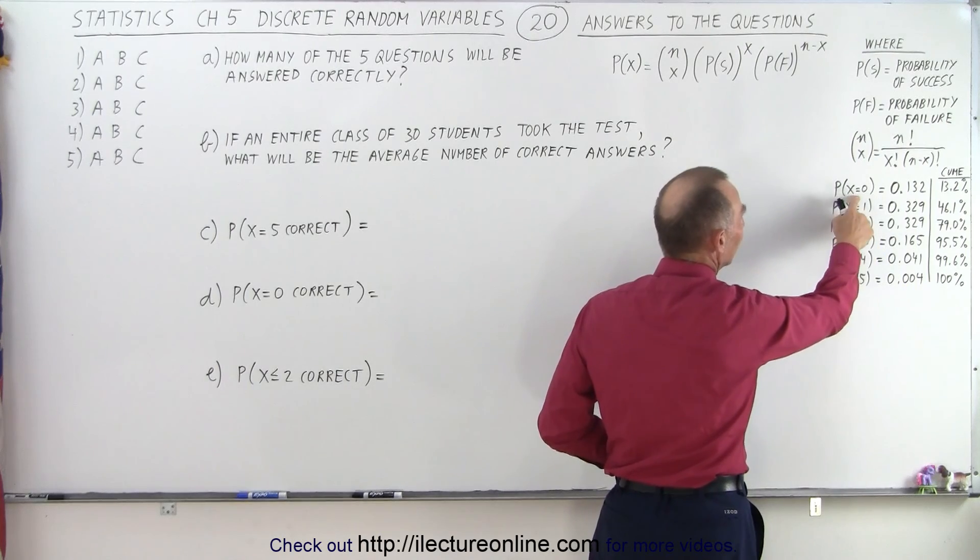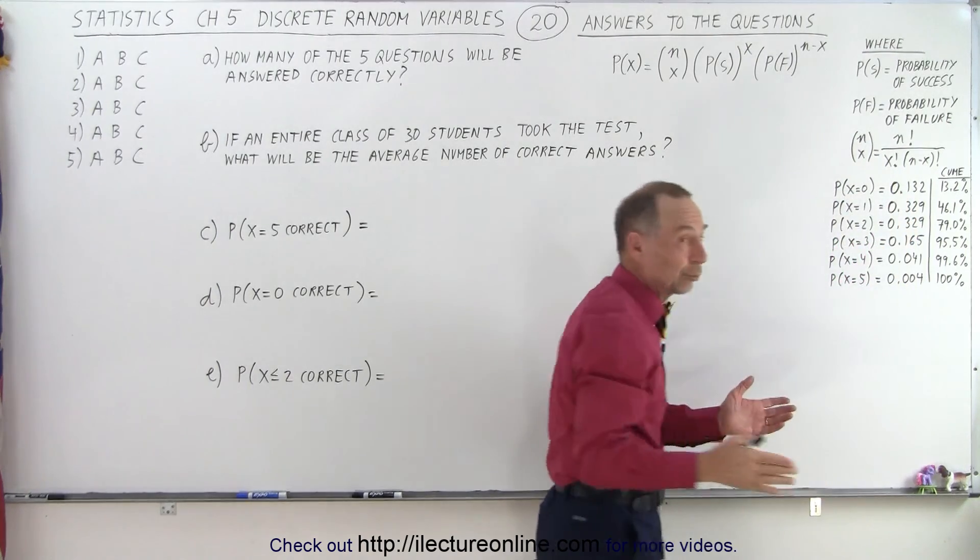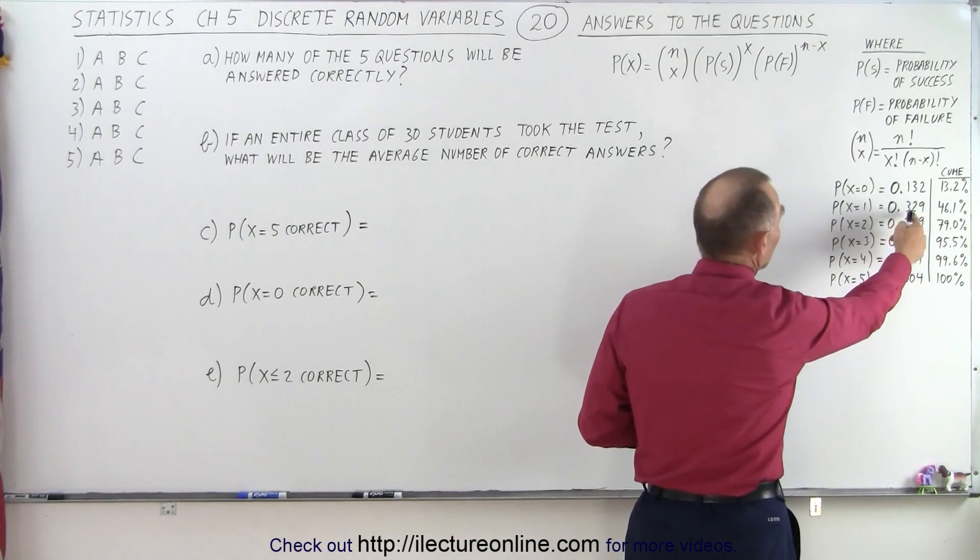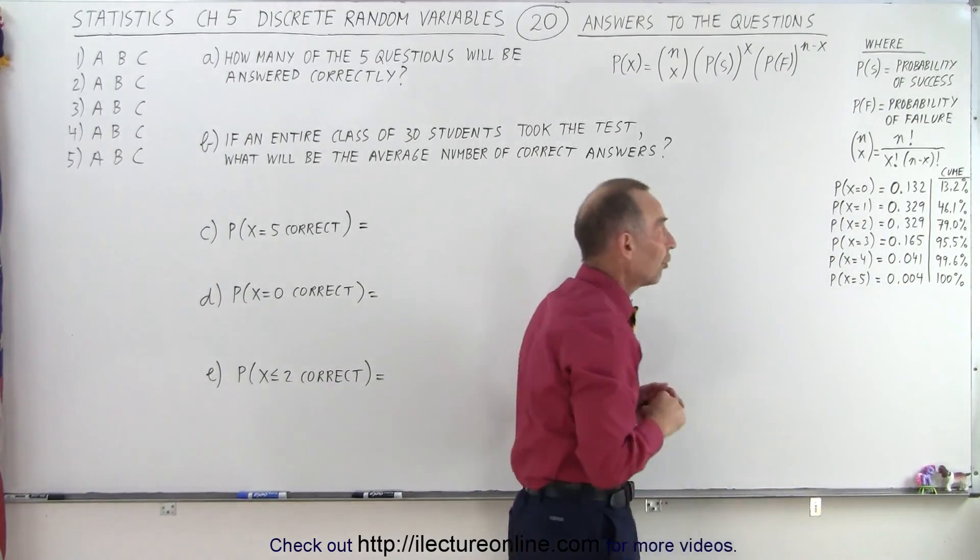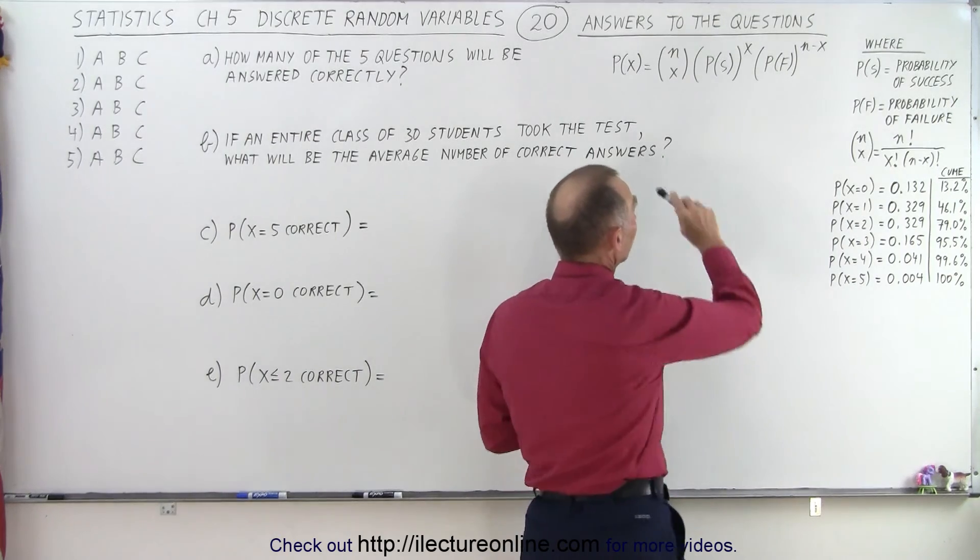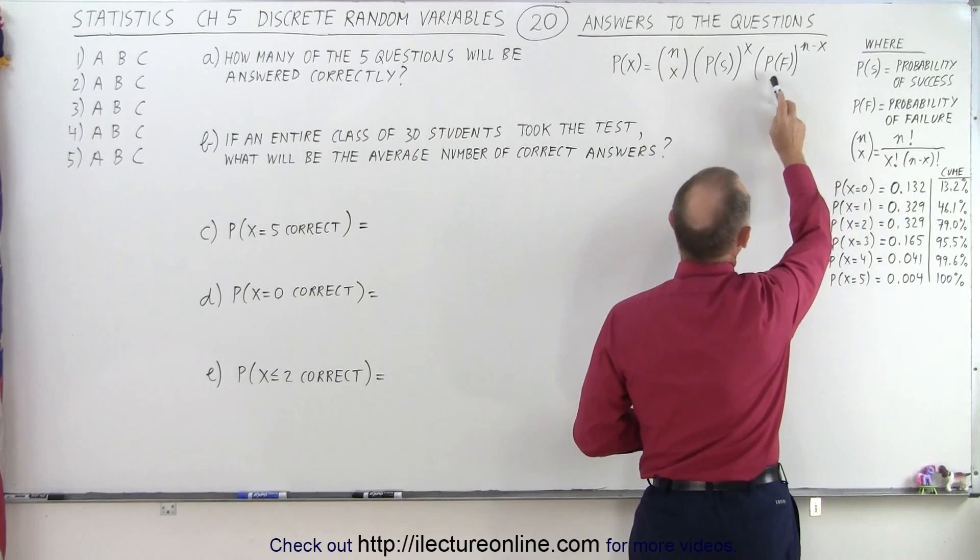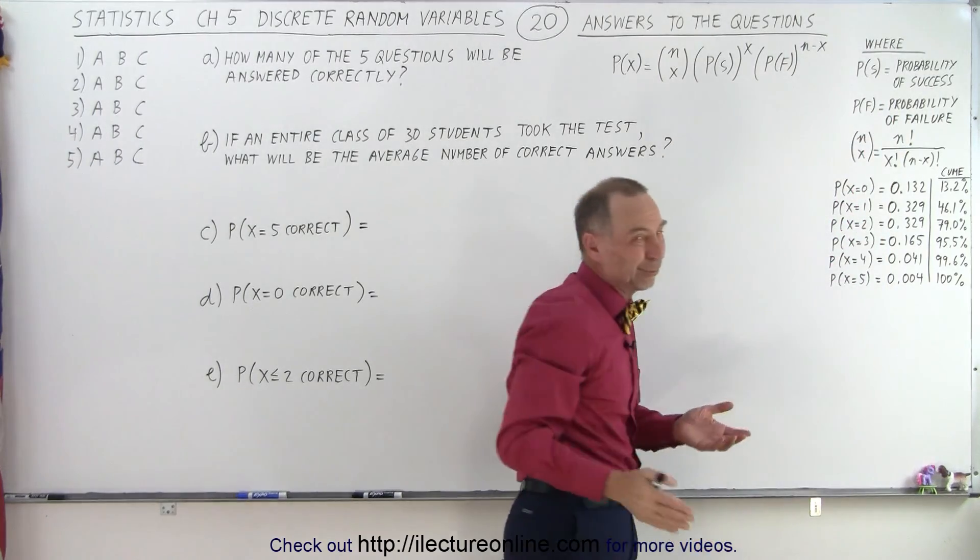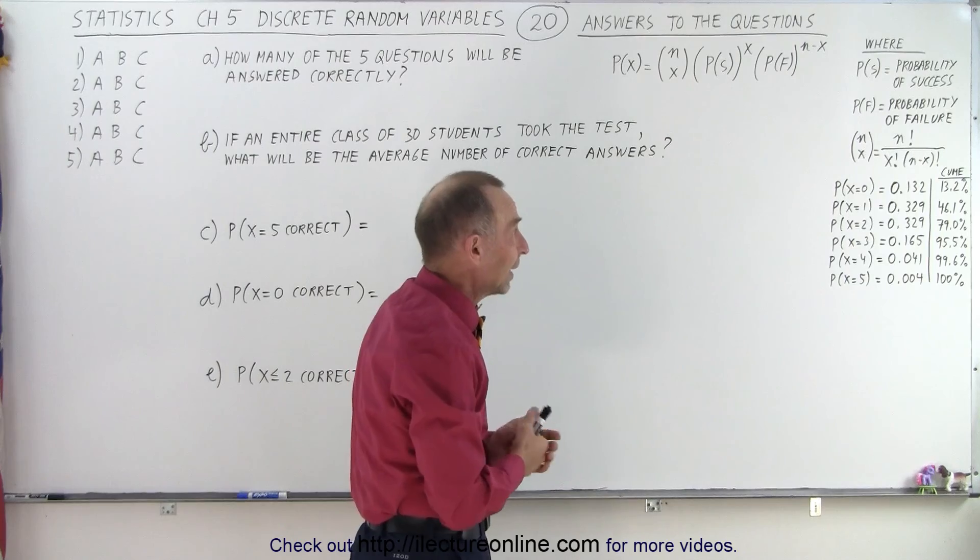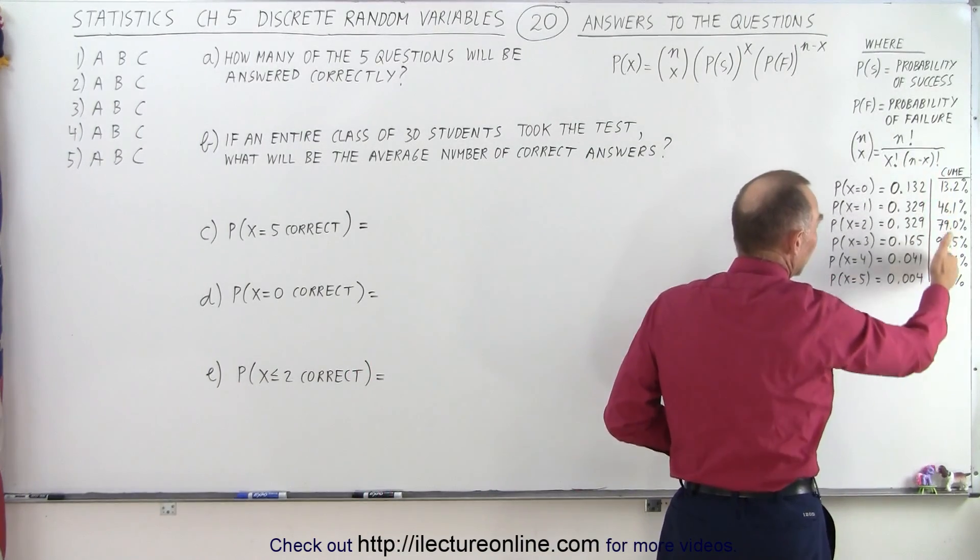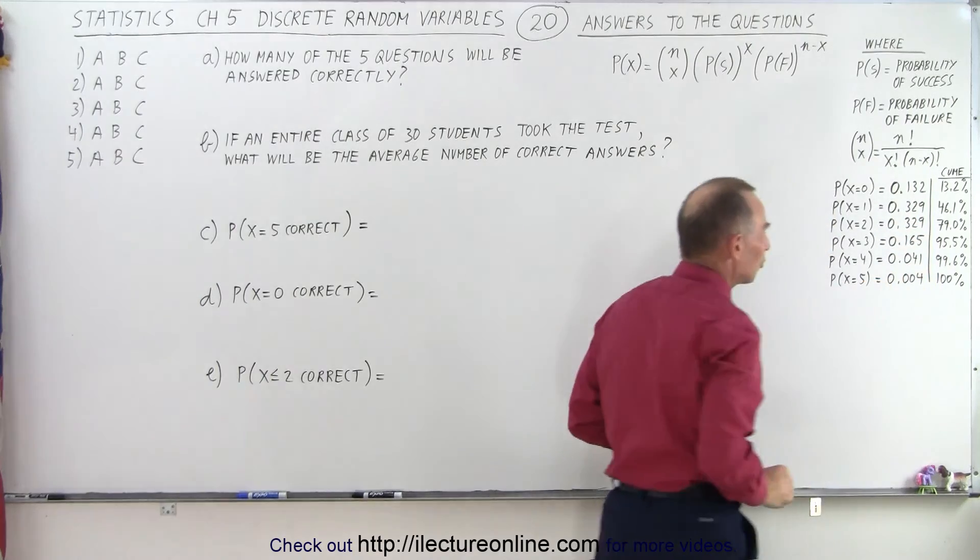The probability to get zero questions correct was 0.132 or 13.2%. The probability of getting one correct was 0.329 or 32.9% and so forth. Notice that in our equation here we have P of S which is the probability of success, and P of F the probability of failure, meaning do we get the correct answer or the wrong answer. And then here's the cumulative percentages. Notice that it should add up to 100% when we add all these numbers together.